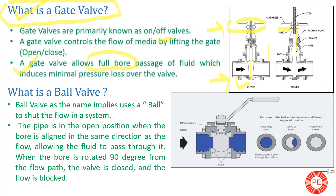Because of this full-bore passage, the size of the valve becomes equal to your pipe size. Because of this, there is minimal pressure loss in the gate valve. So the basic function of a gate valve — if someone asks why it is used in industry — is that when we need 100% isolation in the system, we use a gate valve. Moving on, let's see what is a ball valve.